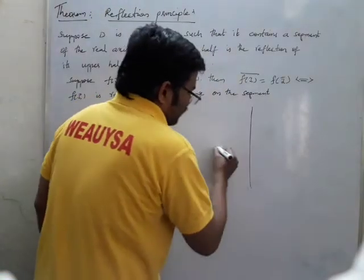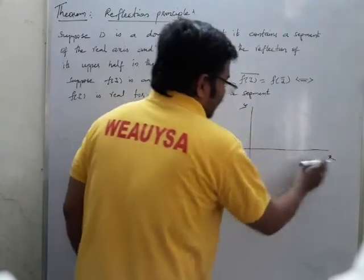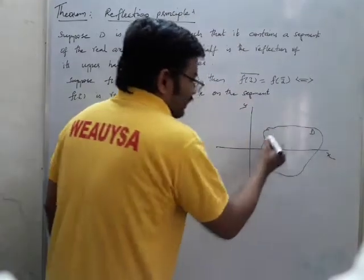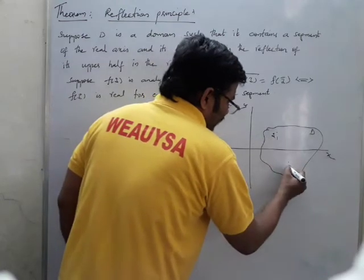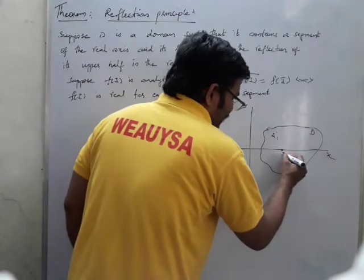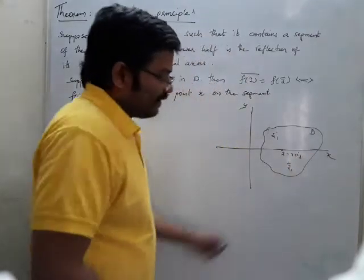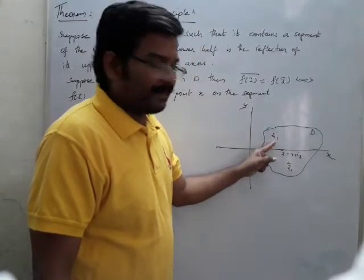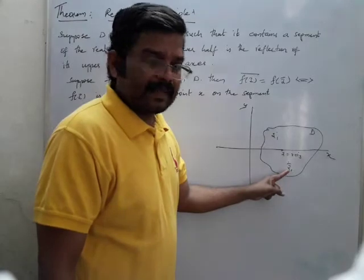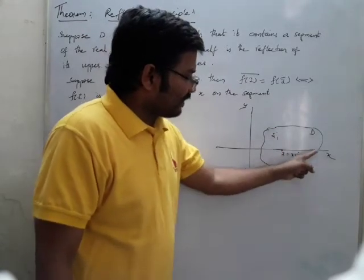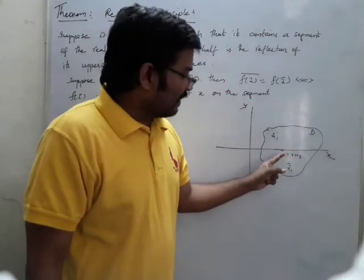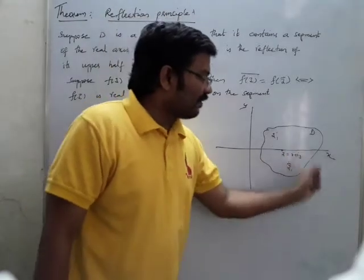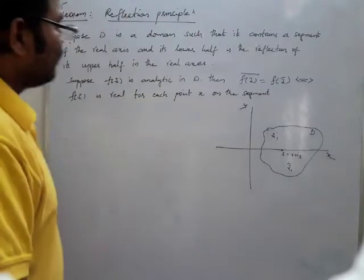For example, take the x-axis and y-axis. In region D, there is a point z₁ and its reflection z₁̄. A point z = x + iy is in the upper half plane, and its reflection x - iy is in the lower half plane. Any point on the real segment satisfies f(x) = x, meaning it takes only real values. This is what the reflection principle states, and now we need to prove it.